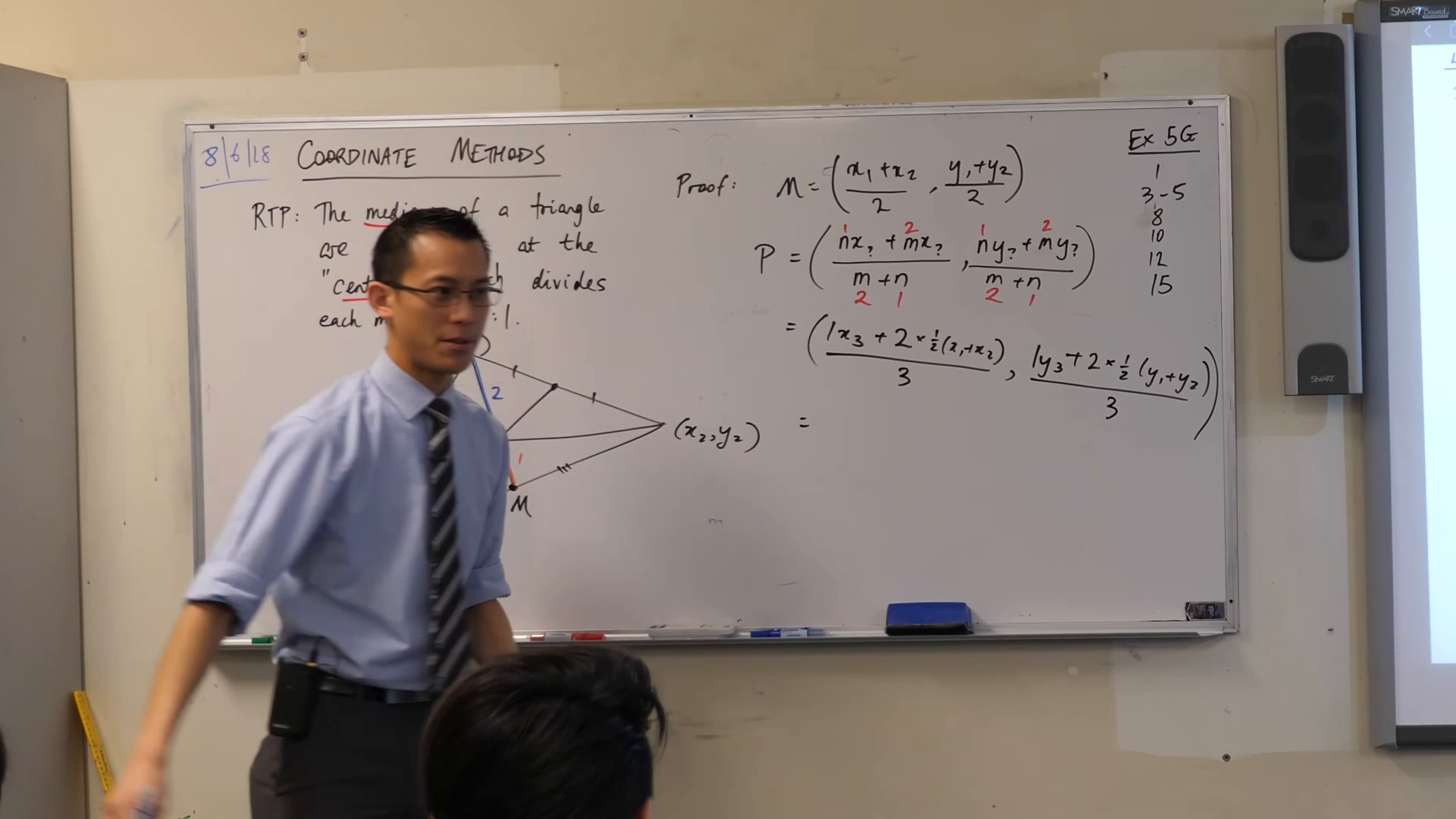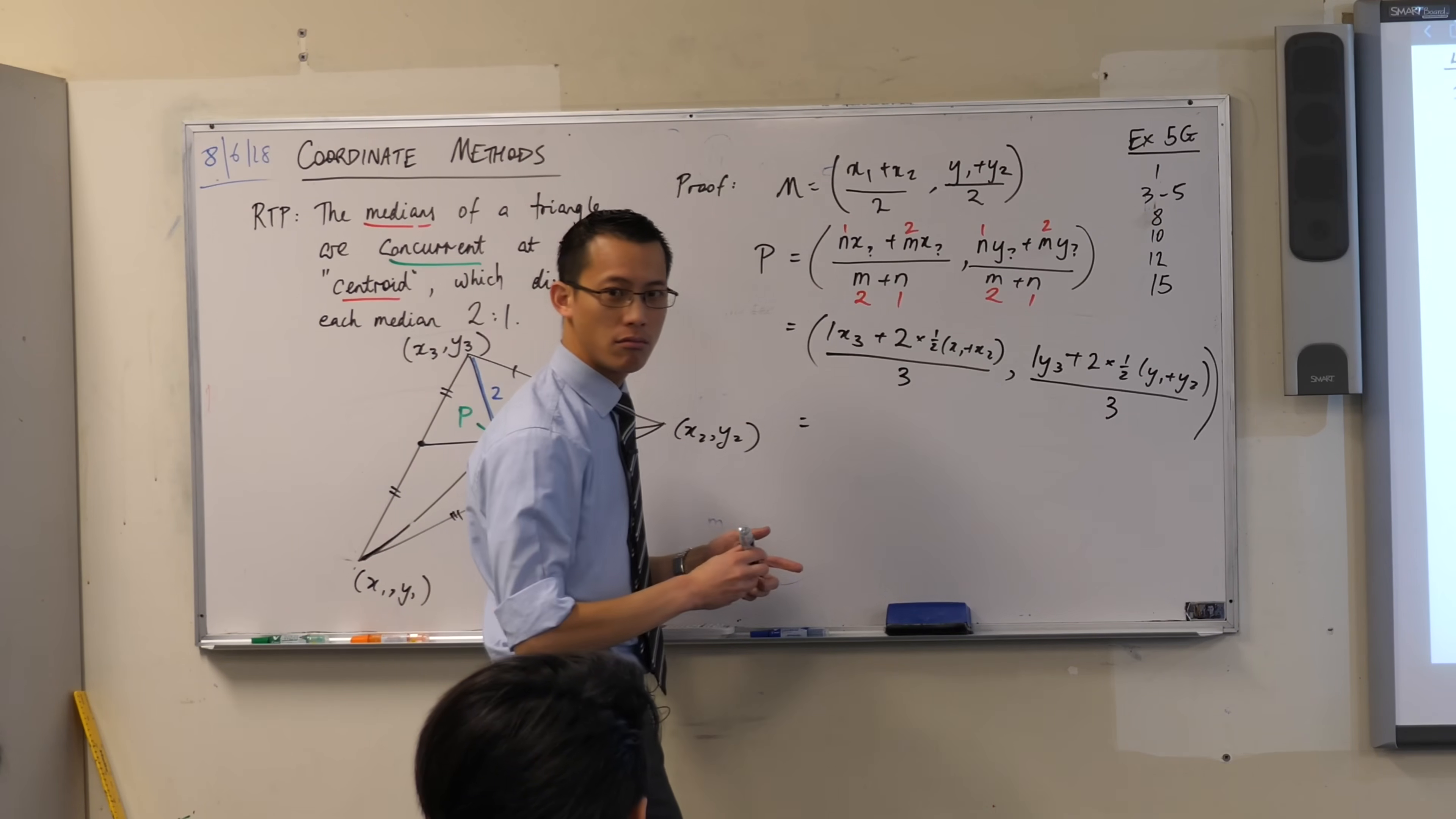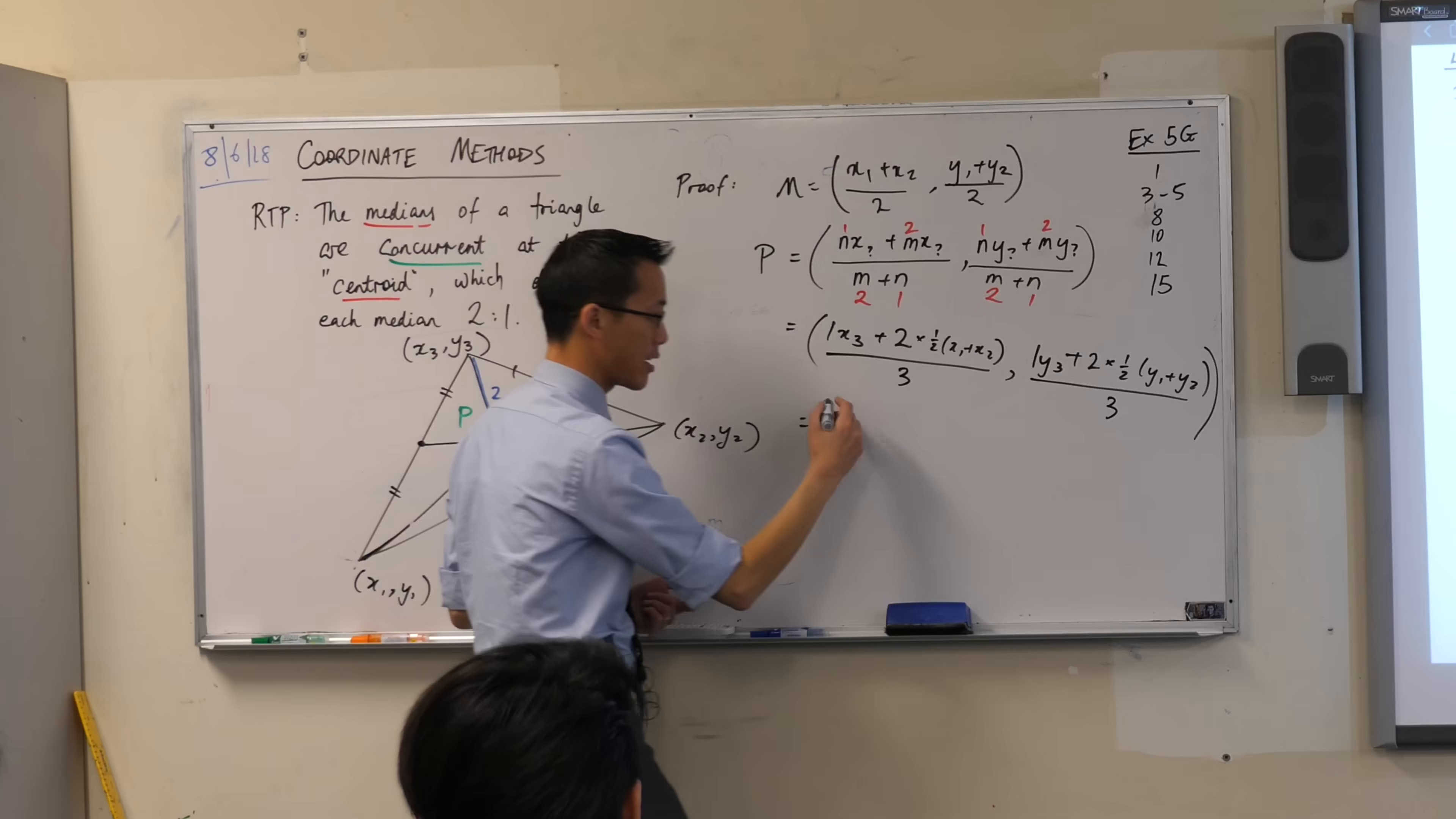Okay. Now, do you notice what's happening, right? What happens to this numerator up here? That 2, for instance, what's going on? It cancels with the half. So in fact, all you get left with from this is x1 plus x2. And then all you get from this is x3, right?